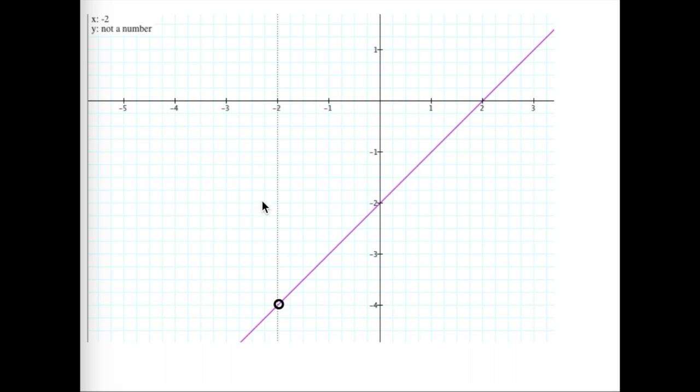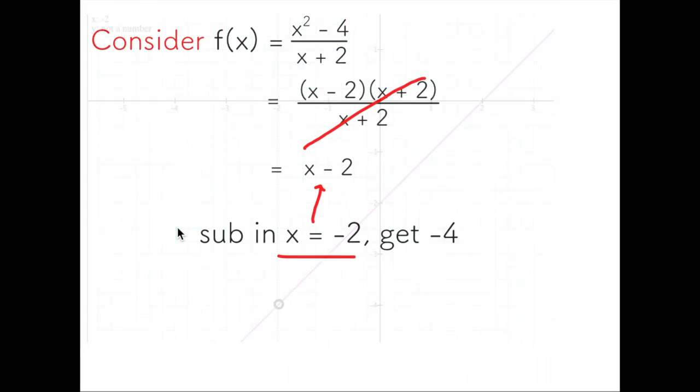That explains why my graphing calculator is telling me I have not a number. Note that the normal line y = x - 2 does not have a hole at negative 2. Only if I simplified a rational function into that line can I say that there is a hole.